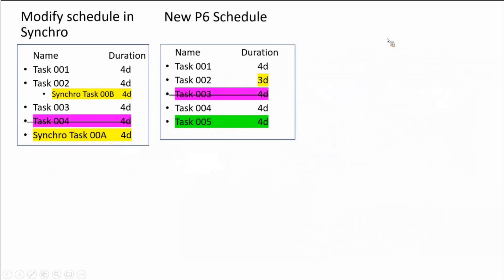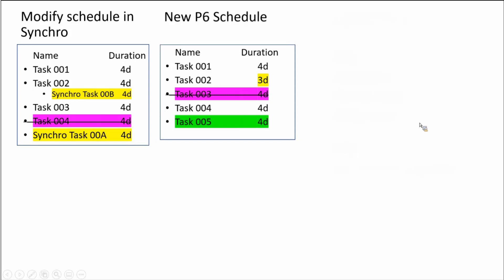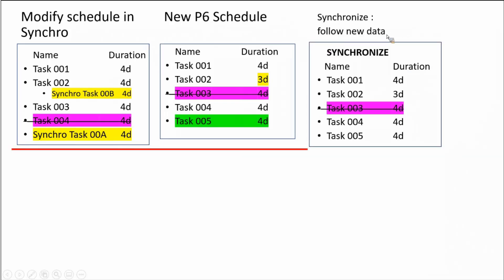We have four options. Skip means do nothing — do not import anything, so our schedule will not change. Synchronize means you will follow the new data exactly. Your data will match your new schedule update. After choosing Synchronize, your Synchro-only tasks will be gone — it just follows the new data. That is Synchronized.